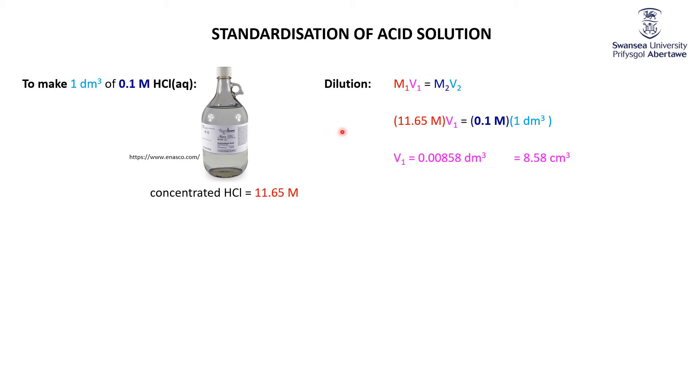So what our technician is going to have to do is they're going to have to measure out 8.58 cubic centimeters and dilute it to give them a liter or a cubic decimeter of solution. First thing they'll do is they'll use probably a pipette to measure out 8.58 cubic centimeters of the concentrated HCl. And that 8.58, you've got to be pretty precise to get that. So we'll talk about that in a second. But remember that you might not get exactly 8.58 cubic centimeters.